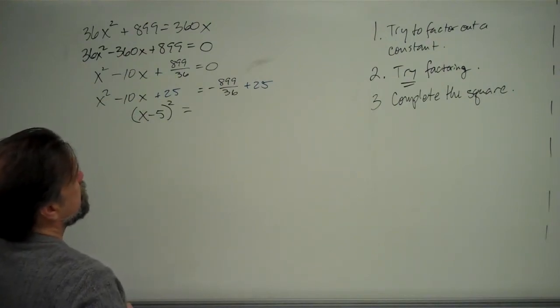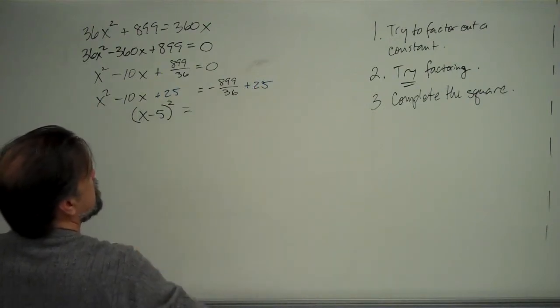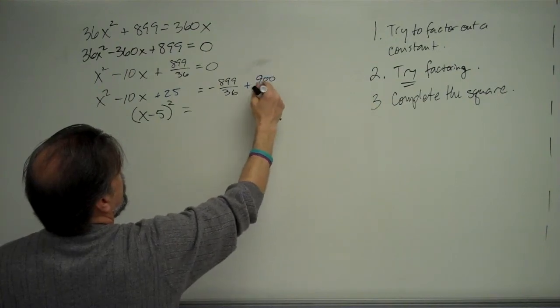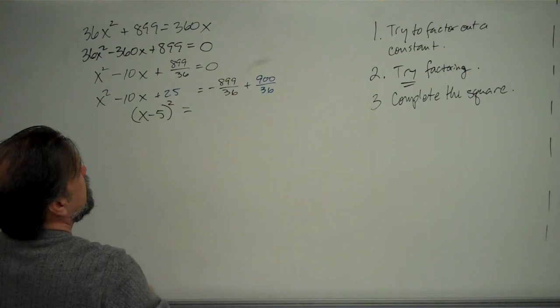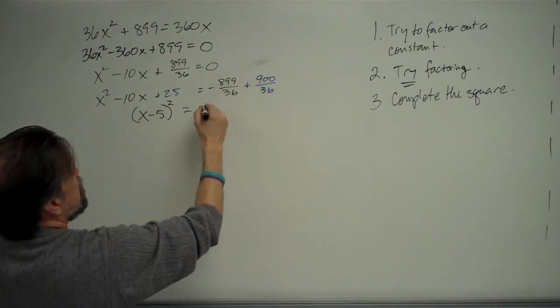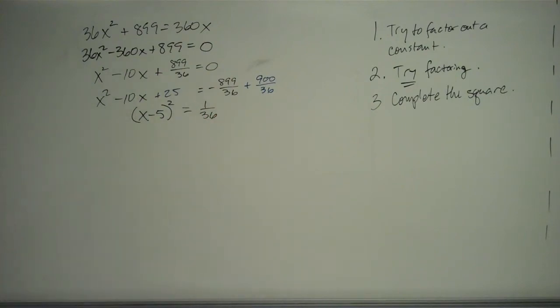As it turns out, 25 is 900 over 36. So let me just change this to 900 over 36. And hey, negative 899 over 36 plus 900 over 36 is just 1 over 36. And life just got a lot easier.